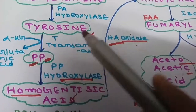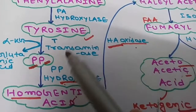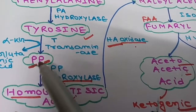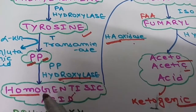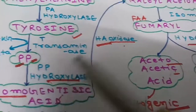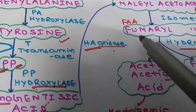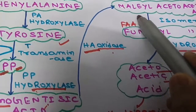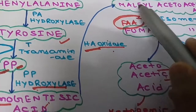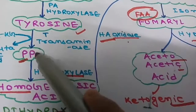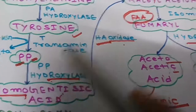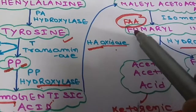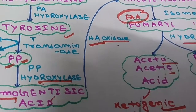Now let's discuss a trick to remember this pathway. Phenylalanine to tyrosine — remember as 'PP Papa.' Then: home, papa, home, ma, father — corresponding to homogentisic acid, para-hydroxyphenylpyruvic acid, maleylacetoacetic acid, fumarylacetoacetic acid. So the mnemonic is: PP, Papa, Home, Ma, Father.